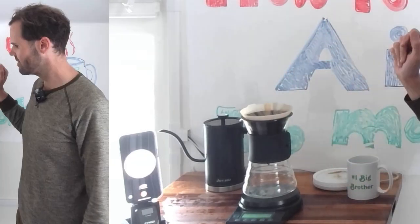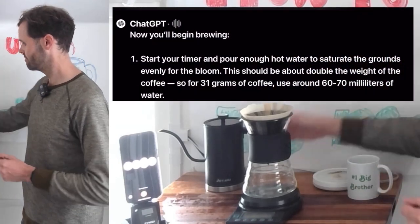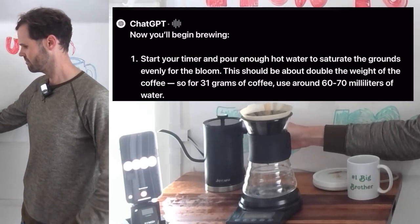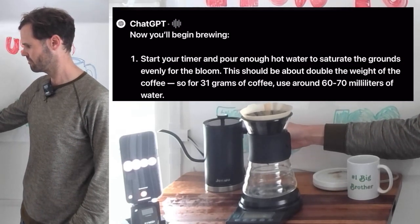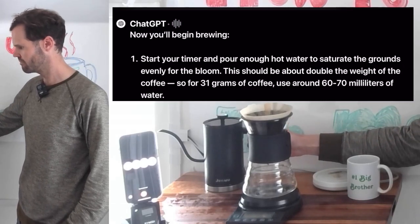I put my coffee grounds in the filter now. What's next? Start your timer and pour enough hot water to saturate the grounds evenly for the bloom. This should be about double the weight of the coffee. So for 31 grams of coffee, use around 60 to 70 milliliters of water.